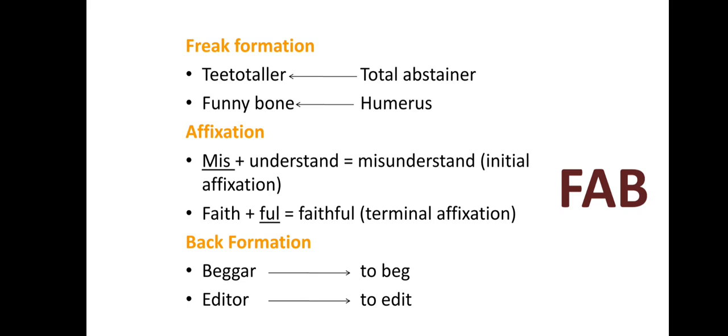In Affixation, new words are formed by adding a prefix or a suffix to an already existing word. Take the example of 'misunderstand' — here 'mis-' is the prefix added to the existing word 'understand.' Another example is 'faithful' — 'faith' is the existing word and '-ful' is the suffix added as affixation.